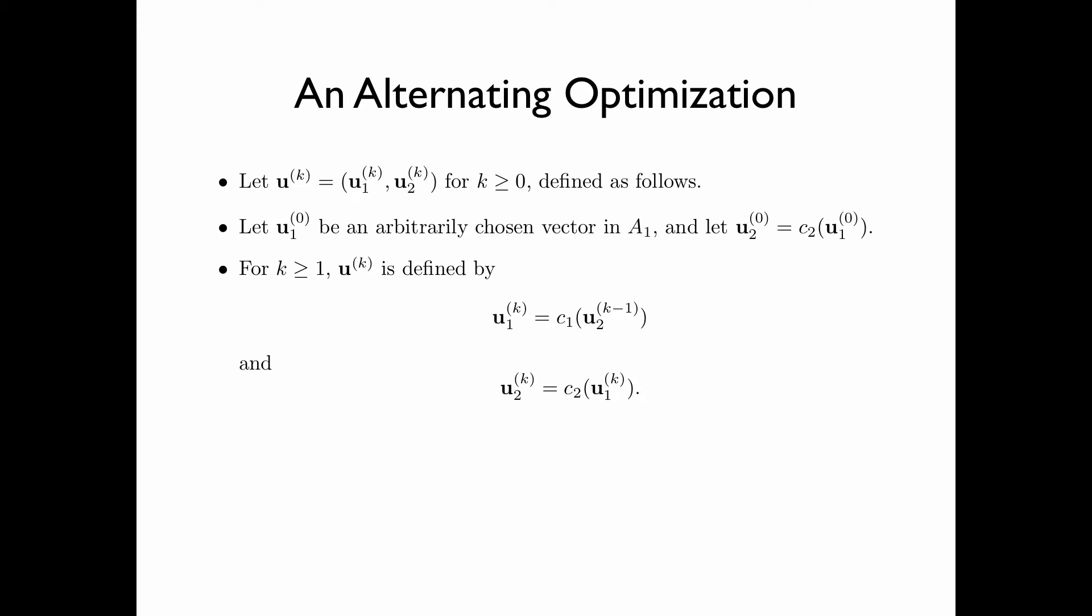For k greater than or equal to 1, u_k is defined by the components u_1^k and u_2^k, where u_1^k is equal to c_1(u_2^(k-1)). That is, the unique u_1 that maximizes f for u_2^(k-1). And u_2^k is equal to c_2(u_1^k).